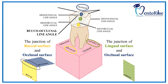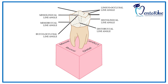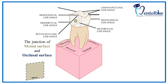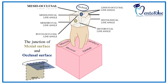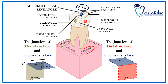The junction of the lingual surface represented in green and the occlusal surface represented in blue forms the linguo-occlusal line angle. Now unlike the anterior teeth, we have to consider the mesial and distal surfaces with the occlusal surface in the posterior teeth. Therefore, the junction of the mesial surface represented in grey with the occlusal surface represented in blue forms the mesio-occlusal line angle, and the junction of the distal surface represented in red with the occlusal surface represented in blue forms the disto-occlusal line angle.